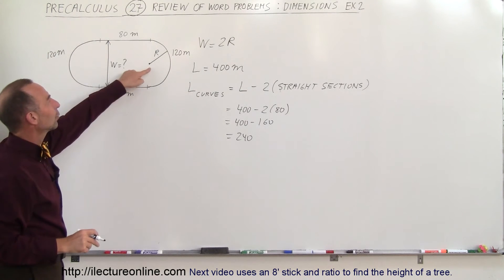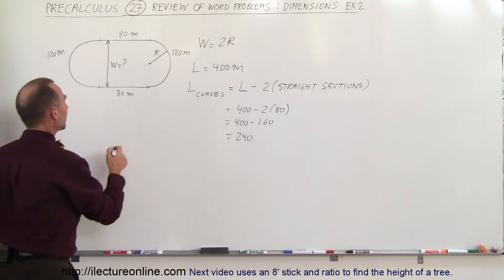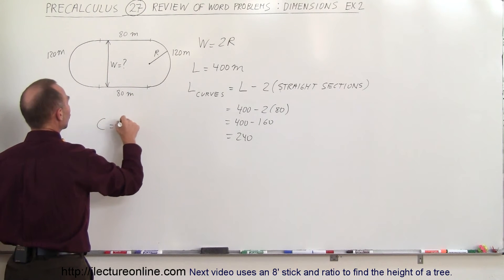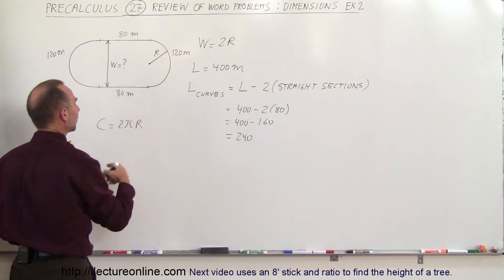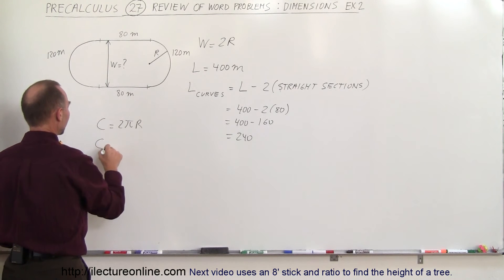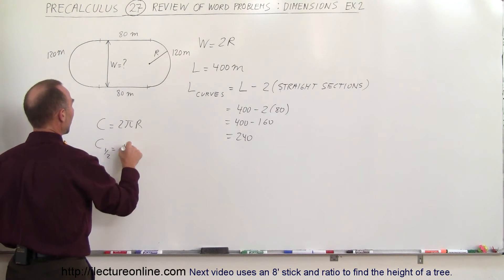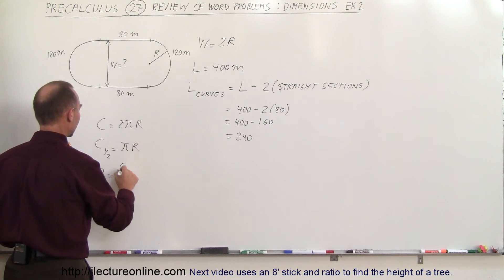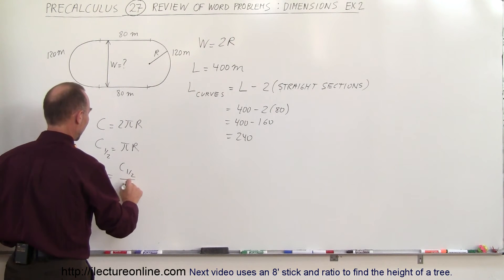Next we need to find the radius. We know that the circumference of a circle is equal to 2πr. That would be a full circle. The circumference of half a circle is equal to πr, which means that r is equal to the circumference of half a circle divided by π.